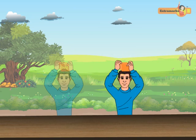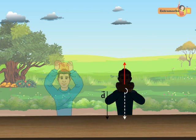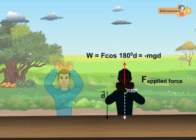In one more case, the boy lowers the block by applying a force lesser in magnitude than the weight of the block. The displacement of the block is in the downward direction, so the angle between the applied force and the displacement is 180 degrees. Hence, the work done by the boy in lowering the block is minus mgd — the work done in this case is negative.